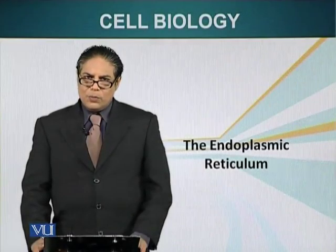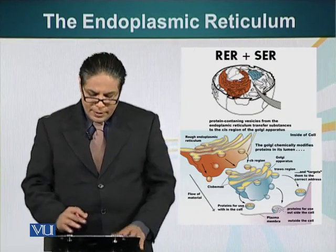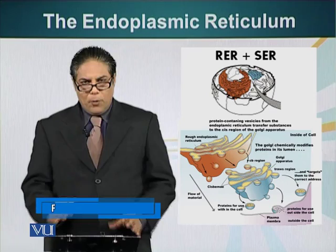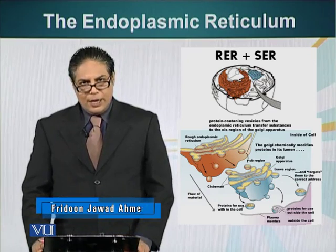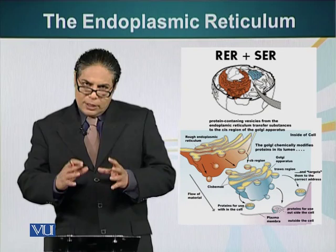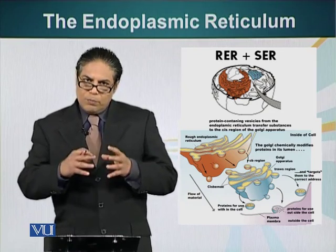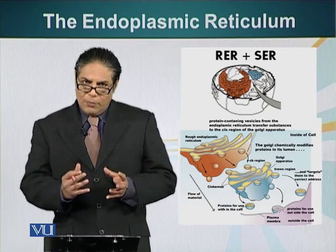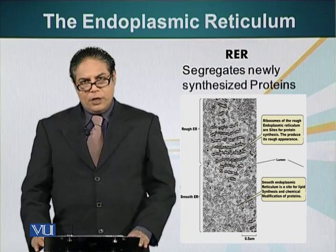In this module we will talk about endoplasmic reticulum. Endoplasmic reticulum is composed of two different components: RER, the rough endoplasmic reticulum, and SER, the smooth endoplasmic reticulum. Both these components of the cell play a very important function in sorting and modifying proteins. Let's talk about the rough endoplasmic reticulum first.